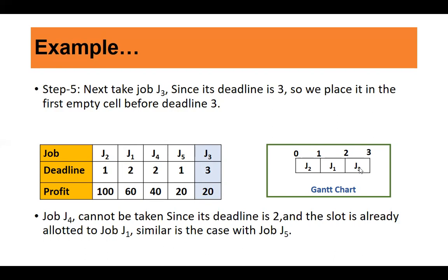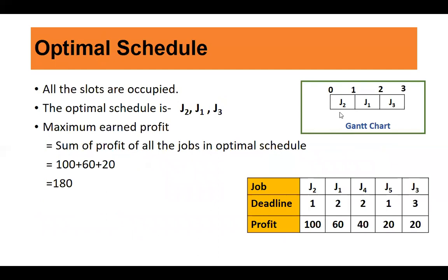All slots are now occupied. With only 3 hours available, the optimal schedule is J2 → J1 → J3. J2 is processed first, then J1, then J3. The maximum profit earned is: J2 (100) + J1 (60) + J3 (20) = 180 units. It's a simple and interesting problem.